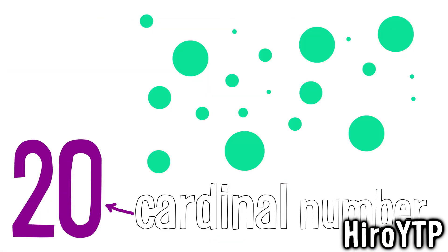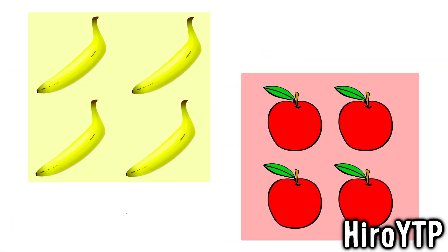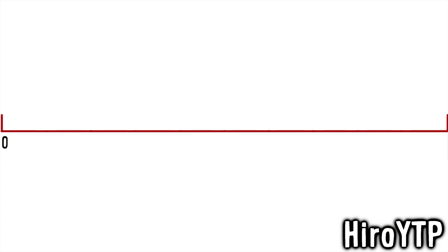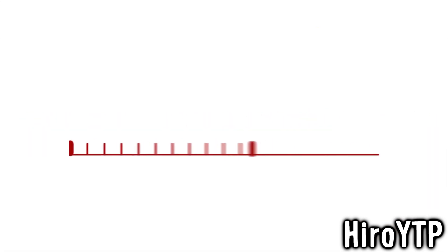Twelve, twenty, twenty — numbers, zero, one, two, three, four, five — numbers, aleph null, aleph null.